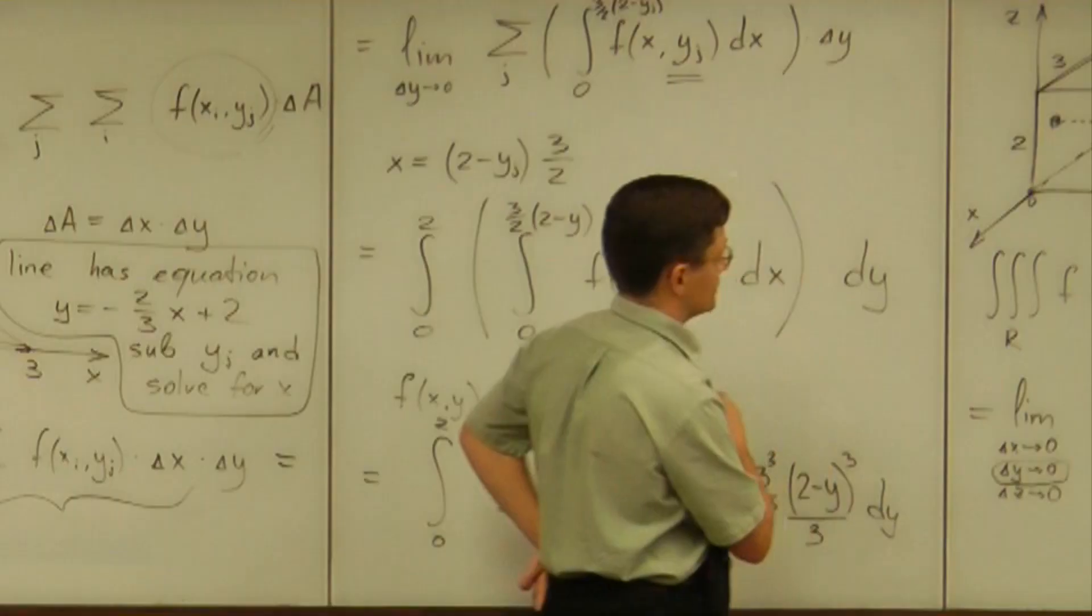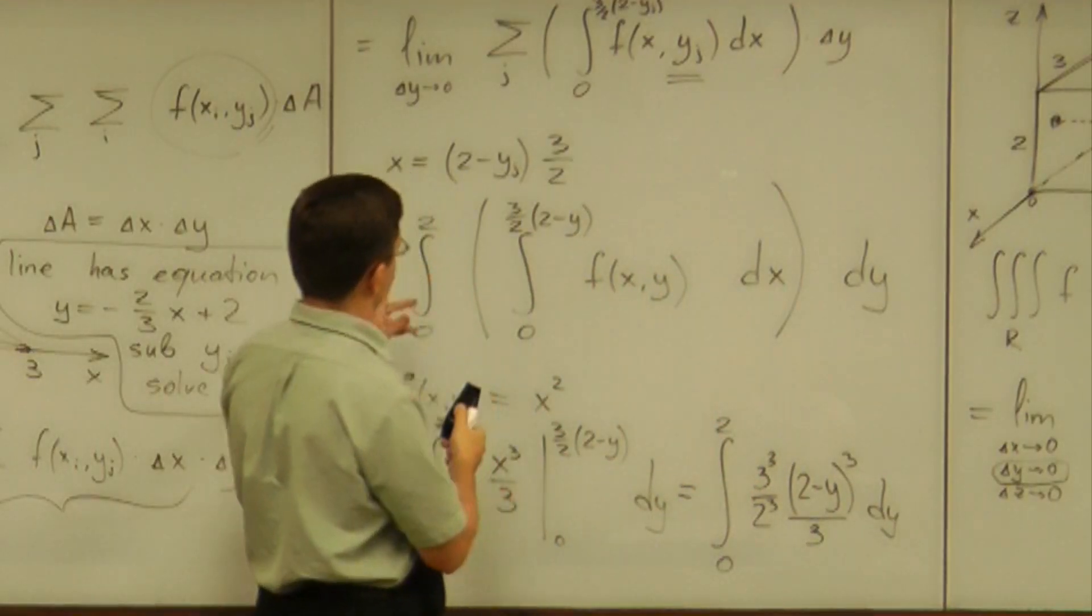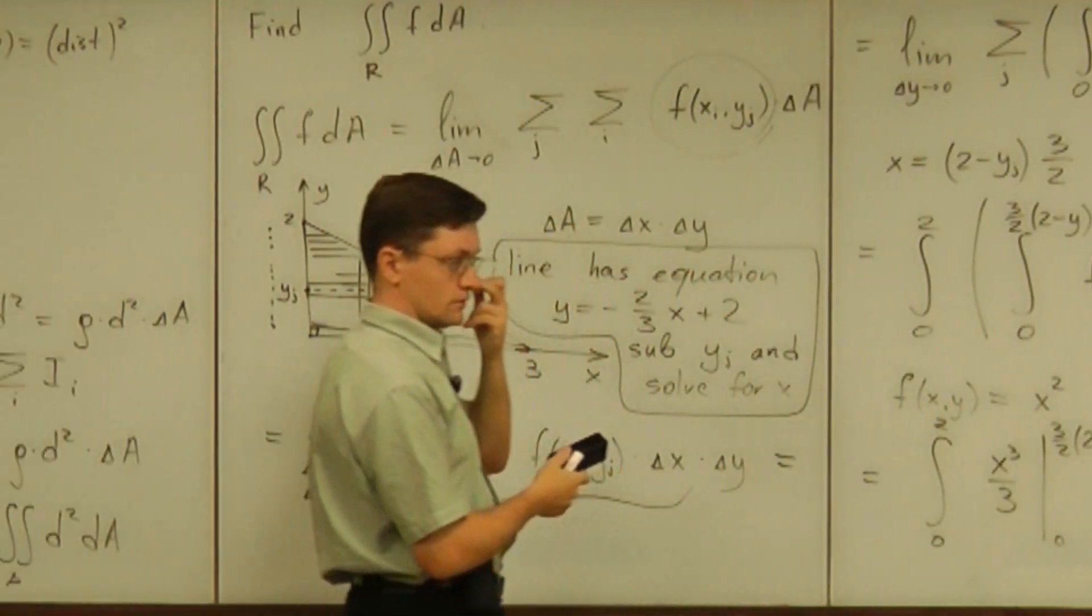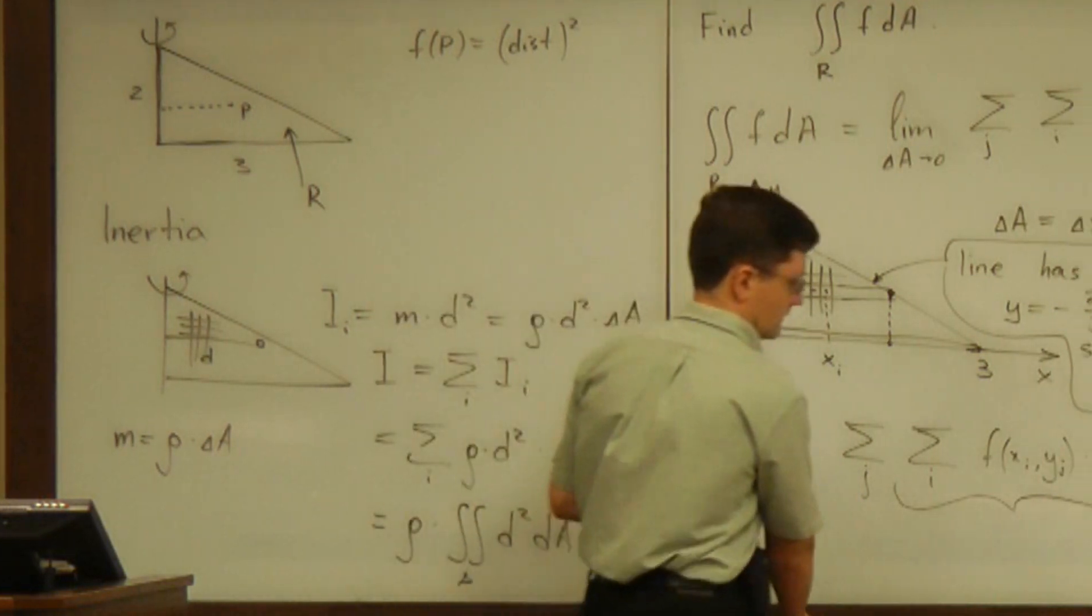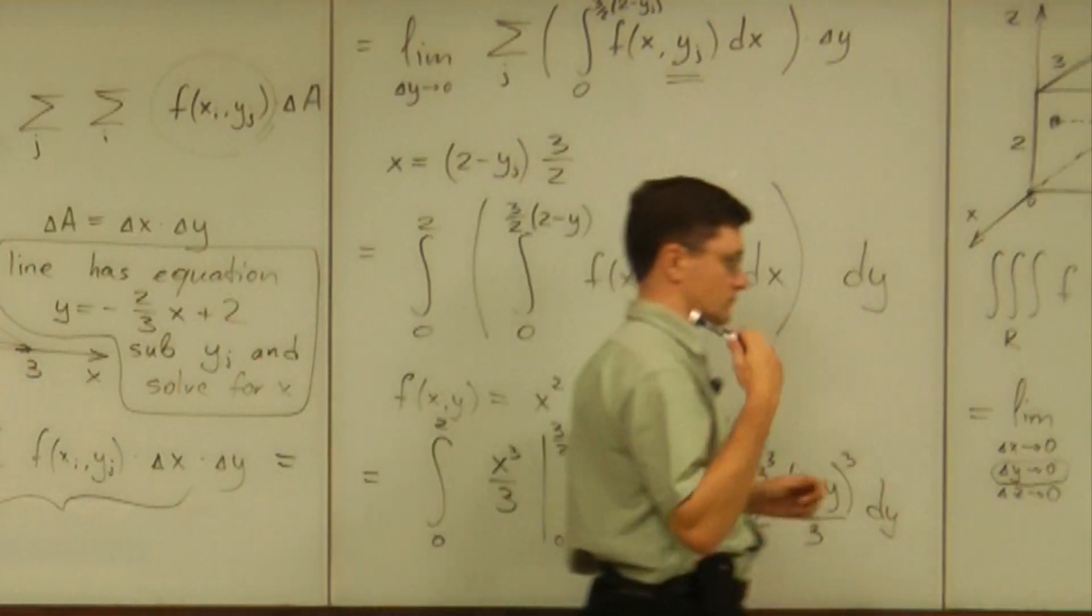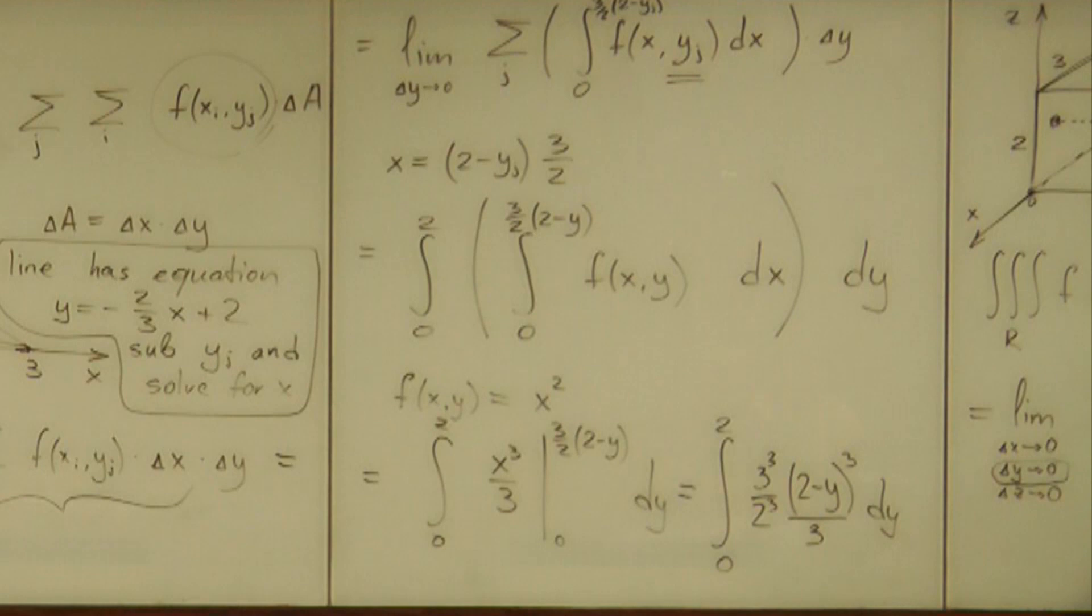And I will do the complete analog, 3D analog of the triangle. The analog is going to be a pyramid. So, should we go to the last example?